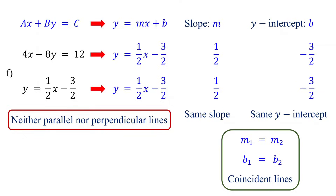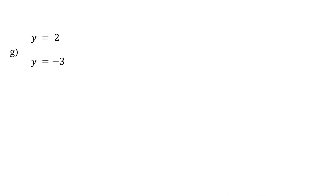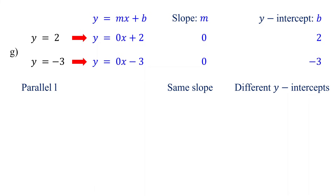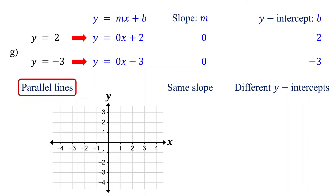Now let's look at some special cases. What happens when there's no x term in the equations? We can write these equations in slope-intercept form as y equals 0x plus 2 and y equals 0x minus 3. From these, we can see that both equations have a slope of 0. The y-intercepts are 2 and negative 3. They have the same slope but different y-intercepts, so they are parallel lines. Remember, when y equals a constant, it represents a horizontal line. So y equals 2 is a horizontal line crossing the y-axis at 2, and y equals negative 3 is a horizontal line crossing the y-axis at negative 3. The graph confirms they are parallel.